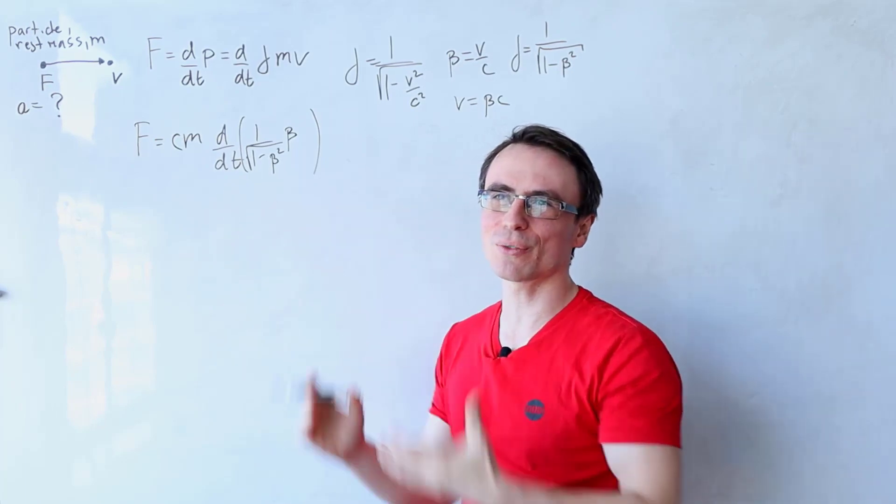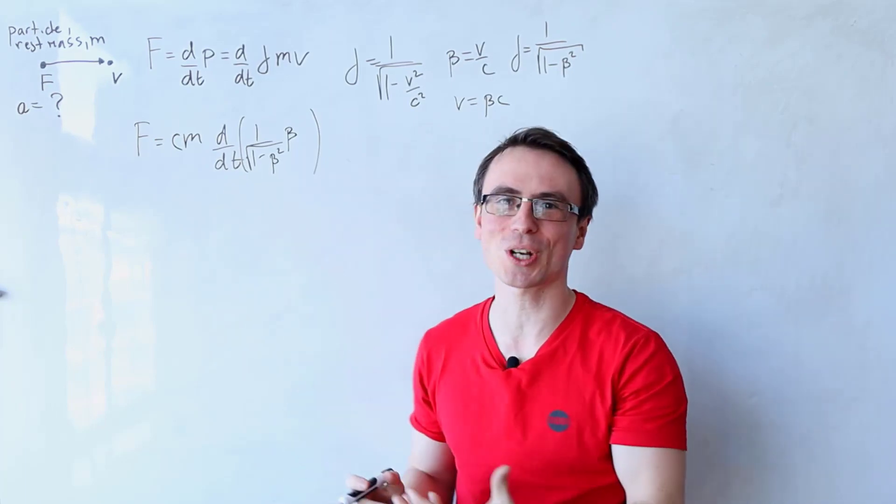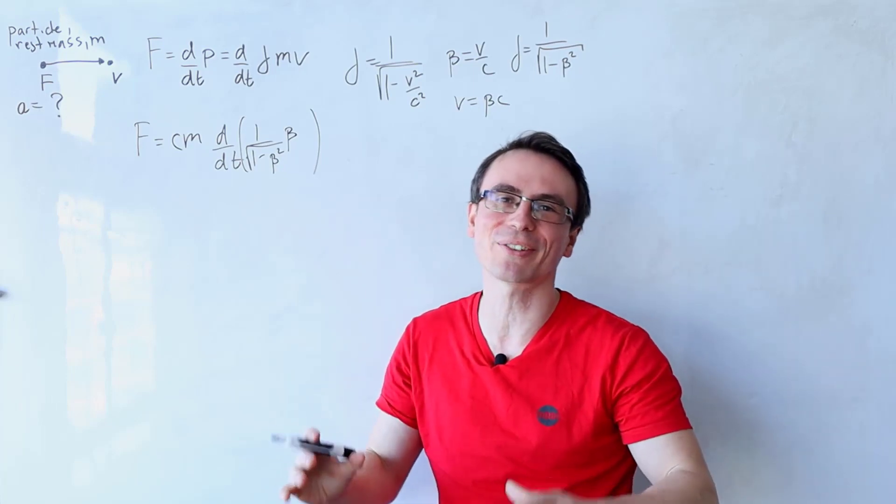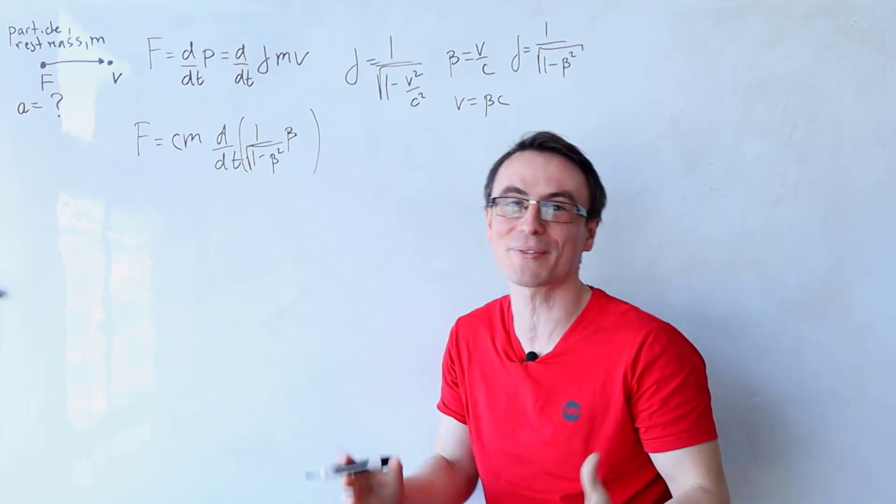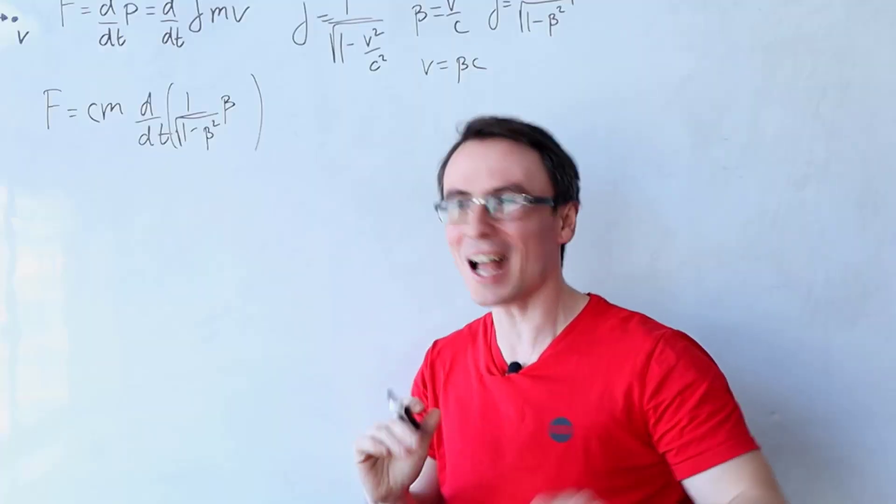And now we have a relatively tricky derivative. Rather than using a combination of the quotient rule and the chain rule, I'm going to use my new favorite trick on differentiation, which is Feynman's method of differentiation. Just look how cool it is.